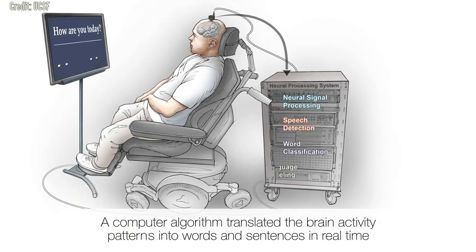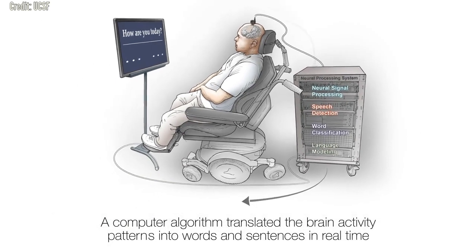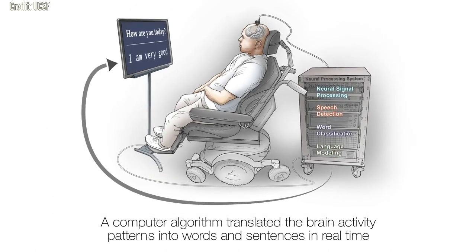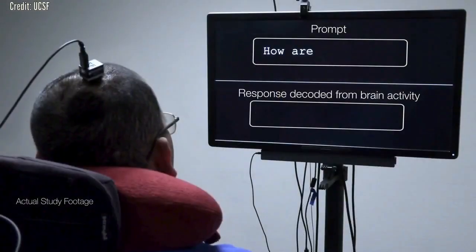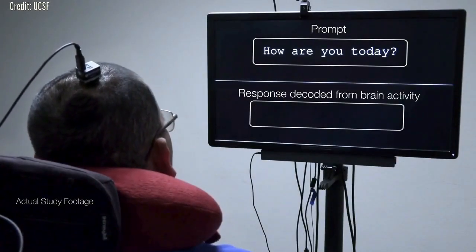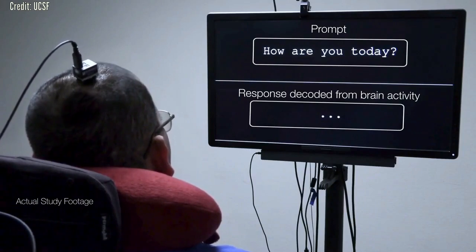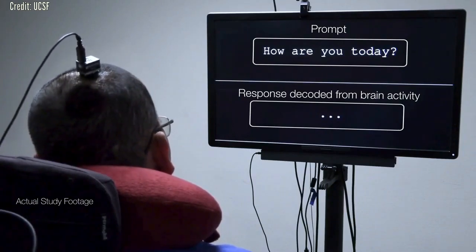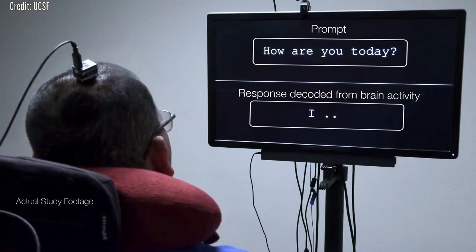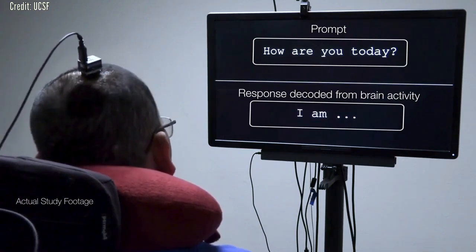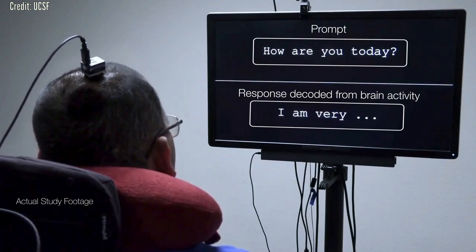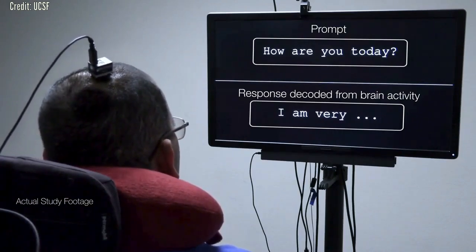For the study, Chang surgically implanted a high-density electrode array over BRAVO-1's speech motor cortex. After the participant's full recovery, his team recorded 22 hours of neural activity in this brain region over 28 sessions and several months. In each session, BRAVO-1 attempted to say each of the 50 vocabulary words many times while the electrodes recorded brain signals from his speech cortex.